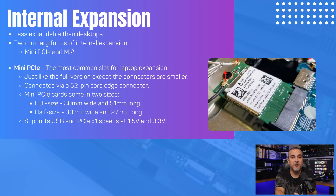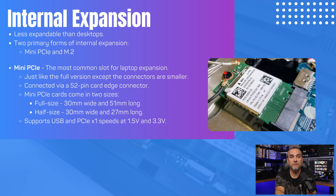Laptops do not have as many expandability options as desktops. There are two main types of internal expansions available for laptops: Mini PCIe and M.2. Mini PCIe is the most common slot used for laptop expansion — similar to the full-size version but with smaller connectors — connected via a 52-pin card edge connector. Mini PCIe cards come in two sizes: full size at 30mm x 51mm and half size at 30mm x 27mm, supporting USB and PCIe x1 speeds at 1.5 and 3.3 volts. The M.2 slot is mainly used for hard drives but can also support Wi-Fi, Bluetooth, GPS, NFC, PCIe, and SATA, featuring 22mm width and 66 pins. M.2 supports USB 2.0 and newer technologies; slower M.2 slots support PCIe x2 while M-keyed slots can handle PCIe x4.